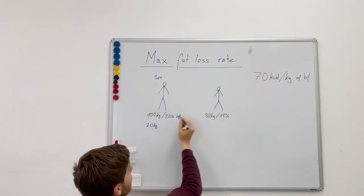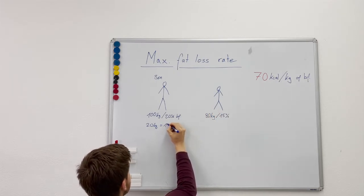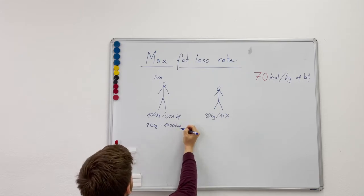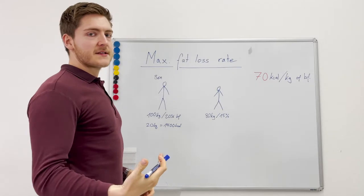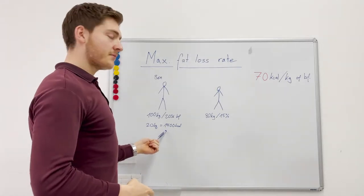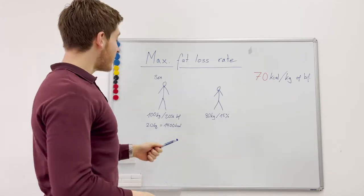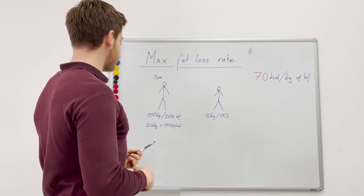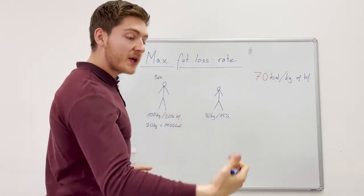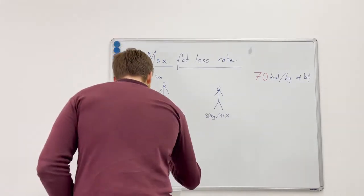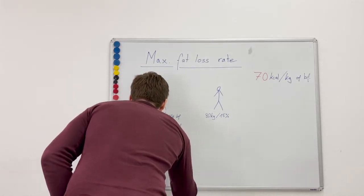Which then results in 1400 calories that he can maximally go into a deficit per day. If he goes above that, he's going to lose muscle mass—not a cool thing—but maximally to really go at the maximum pace, 1400 calories.